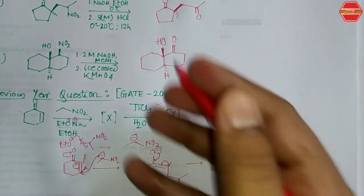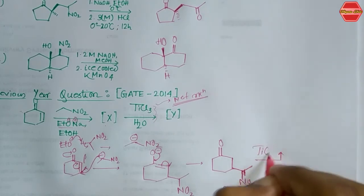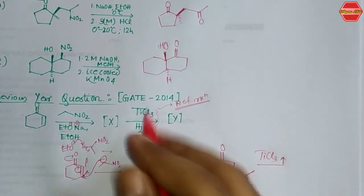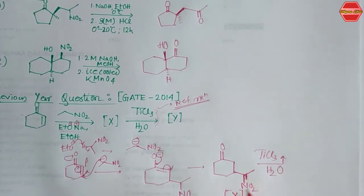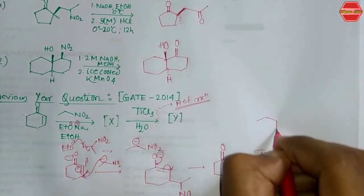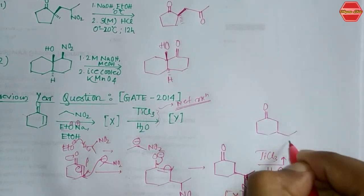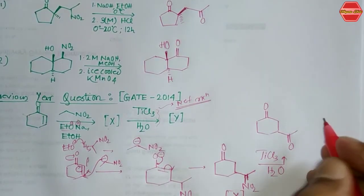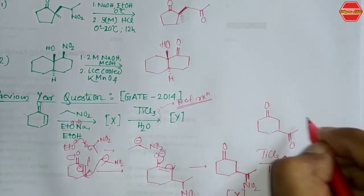For product Y, the Neff reaction reductive condition is used — TiCl₃ and water — so the NO₂ group is converted to the corresponding ketone, giving the major product Y.